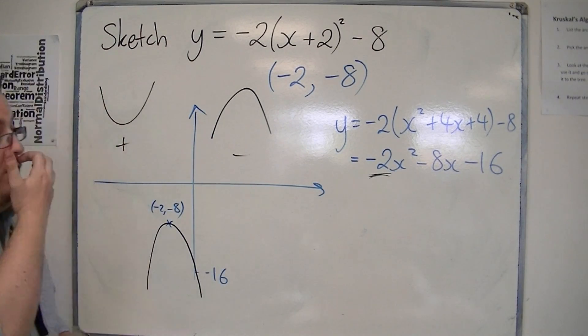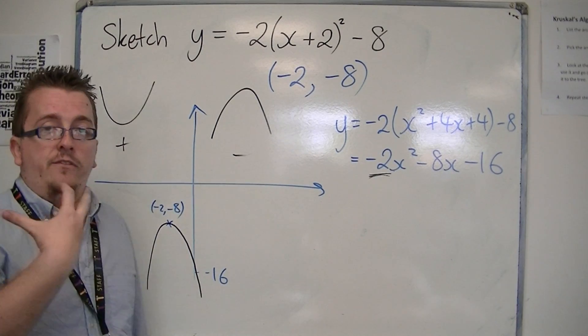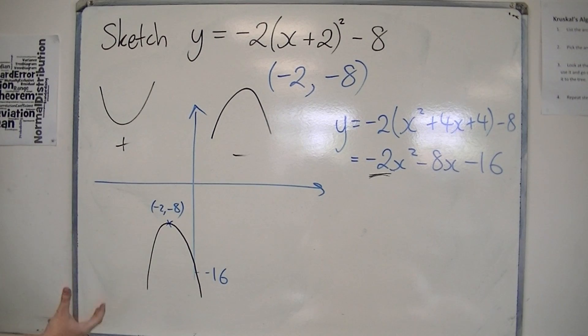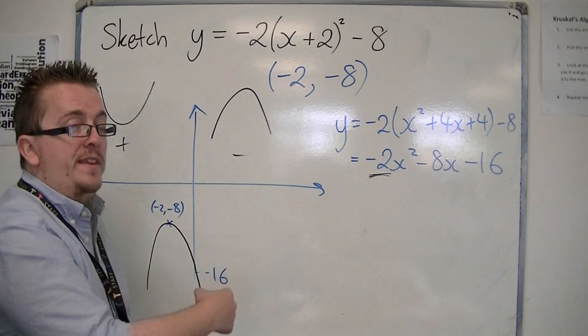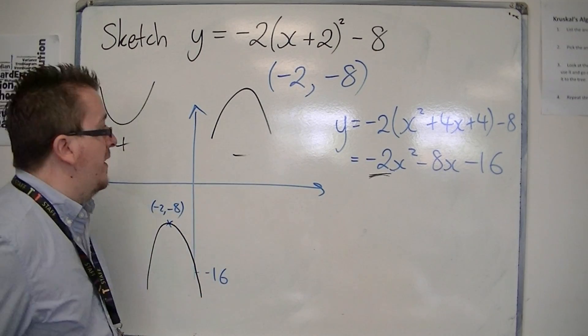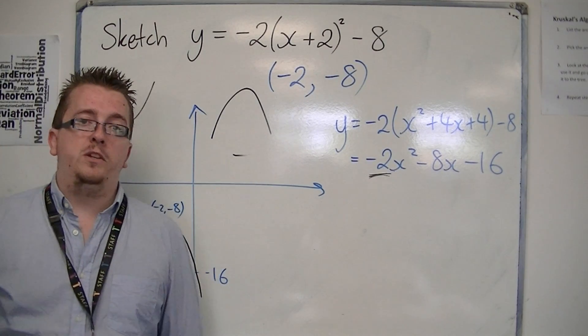So if you ever get a negative amount of x squared, what's going to happen is that you actually have a parabola that is upside down to usual. So don't let that worry you, but you go for exactly the same process as you normally would.